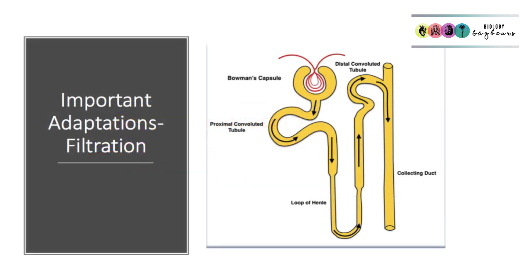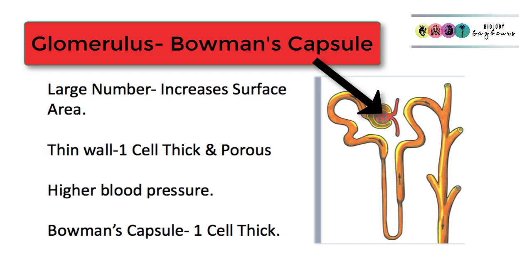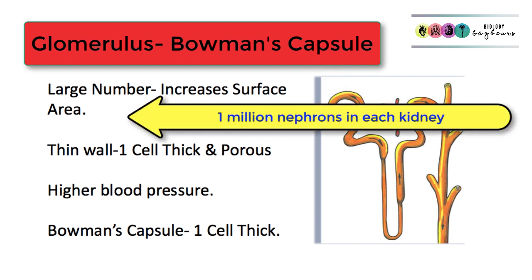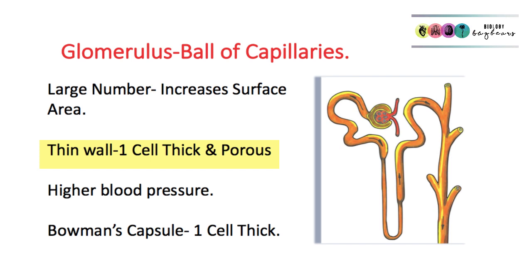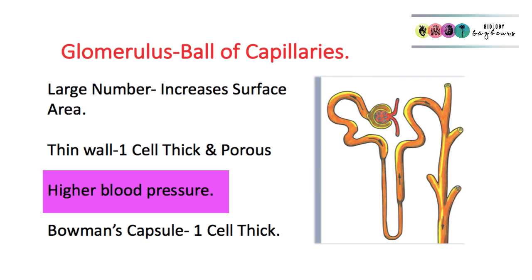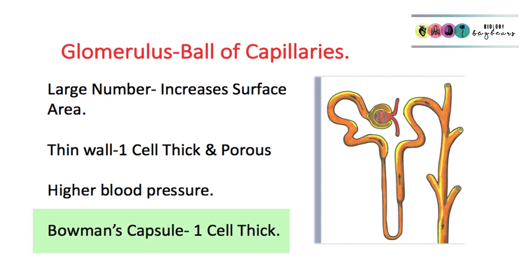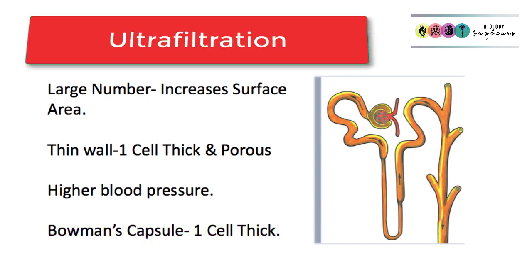But why is the nephron particularly adapted to carrying out filtration? Filtration takes place in the glomerulus, which is encapsulated in Bowman's capsule, sometimes referred to as the renal capsule. There are about one million nephrons in each kidney, so there are a lot of glomeruli and a lot of filtration going on. The glomerulus is a ball of leaky capillaries — they are one cell thick but highly porous. The blood flow into the glomerulus is under high pressure due to the narrowing of the afferent arteriole. Bowman's capsule is also only one cell thick, which is another adaptation facilitating what we call ultrafiltration.